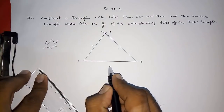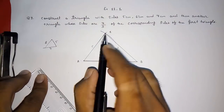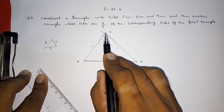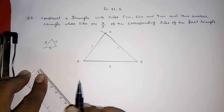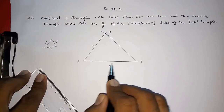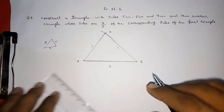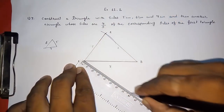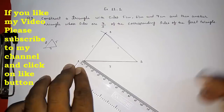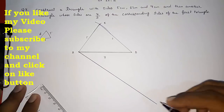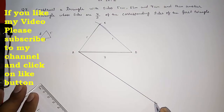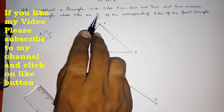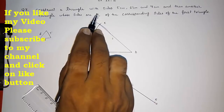Our construction will be drawn out from the triangle — don't worry, we will handle that. Now we have to draw an acute angle ray AX. We need to divide it into seven parts, since the bigger triangle is 7 parts.